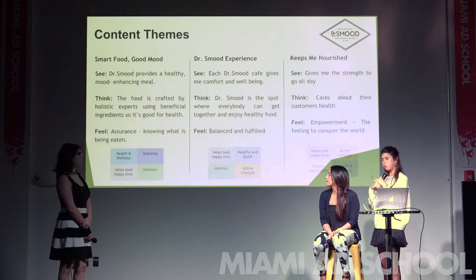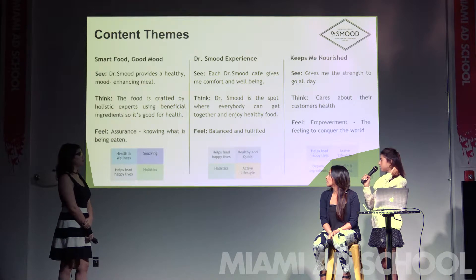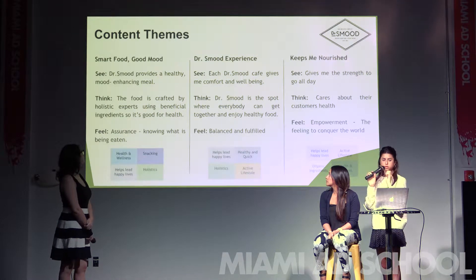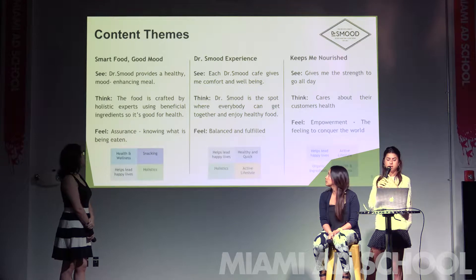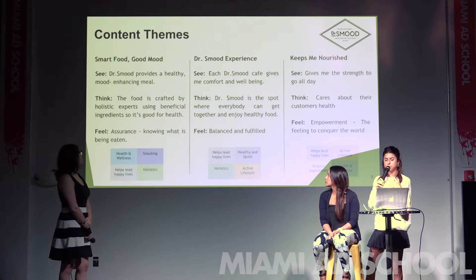The themes we created for our campaign are based on how all of these things go together. The first theme is smart food for a good mood. Dr. Smooth provides a healthy and mood-enhancing meal. The food is crafted by holistic experts using beneficial ingredients, so it's good for your health, and customers trust it — they feel assurance, they know what's in their food. This touches health and wellness, helping them lead healthy and happy lives, and their interest in snacking and holistics.